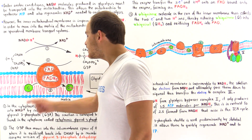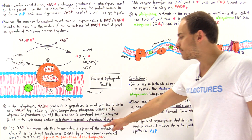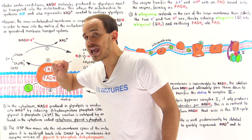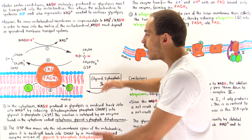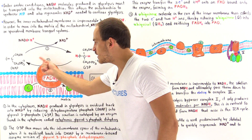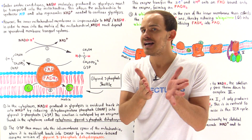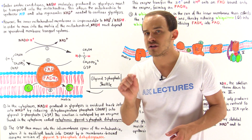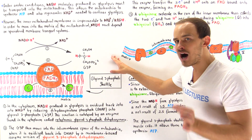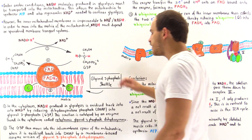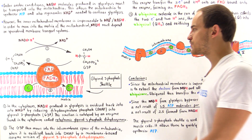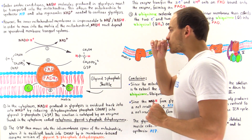Once G3P moves into the intermembrane space of the mitochondria, it is oxidized back into DHAP by an enzyme found on the outer portion of the inner membrane of the mitochondria. This enzyme is an isozyme version of the cytoplasmic glycerol 3-phosphate dehydrogenase enzyme, so we call it the mitochondrial glycerol 3-phosphate dehydrogenase.